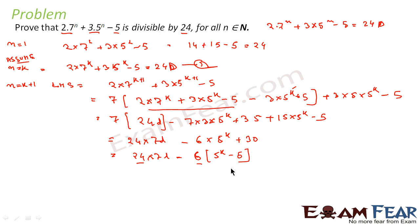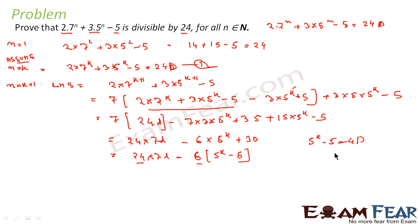We know that 24 into 7d is a multiple of 24, and the other part is a multiple of 6. So if we can prove that 5 to the power k minus 5 is a multiple of 4, our job is done. We verify: k=1 gives 5 minus 5 equals 0; k=2 gives 25 minus 5 equals 20; k=3 gives 125 minus 5 equals 120 — all multiples of 4. So 5 to the power k minus 5 equals 4d.